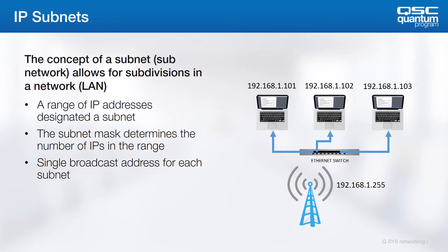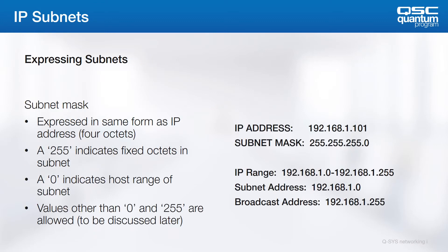When expressing subnets, we have the same concept as an IP address — four octets. A 255 in an octet means that the corresponding octet of the device IP will have to match to make that group. A zero in an octet means a device can have any IP address in that place and be a member of the group, as long as it meets the other conditions. Values other than 255 and zero are allowed in subnets, but we'll discuss those later.